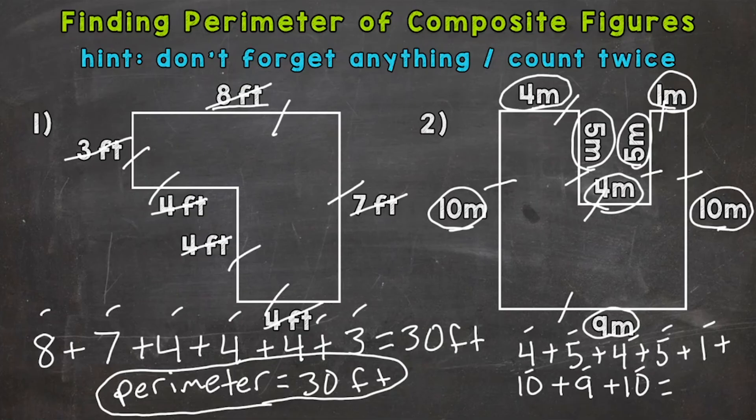Let's add them up. Four plus five is nine, plus four is 13, plus five is 18, plus one is 19, plus ten is 29, plus nine is 38, plus another ten is 48.